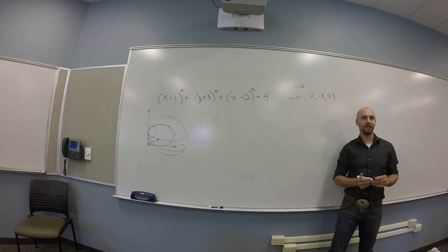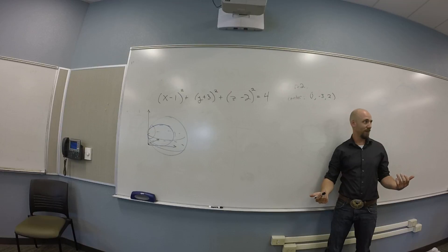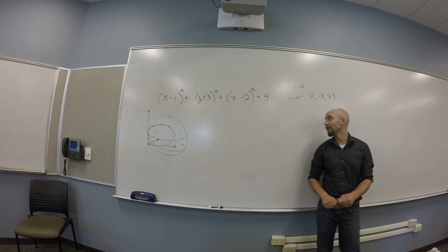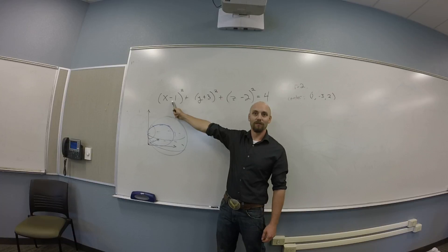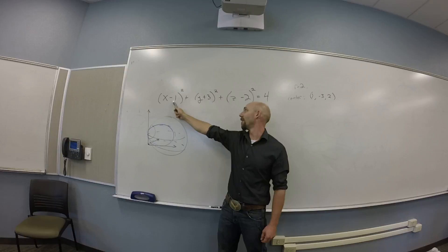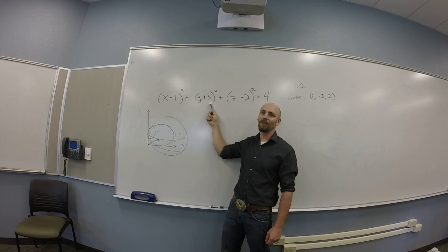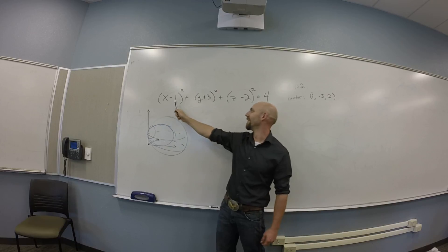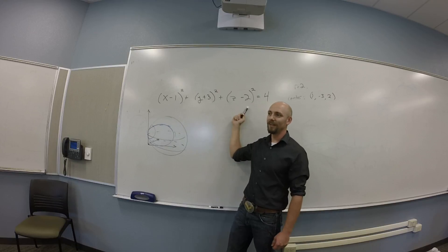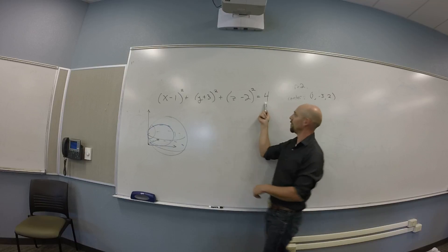You guys see why the center's there? These are shifting rules from algebra 2 — the x shift is right one, the y shift is back three (left three in the y), and up two. So we did right one, back three, up two. And the radius was two.